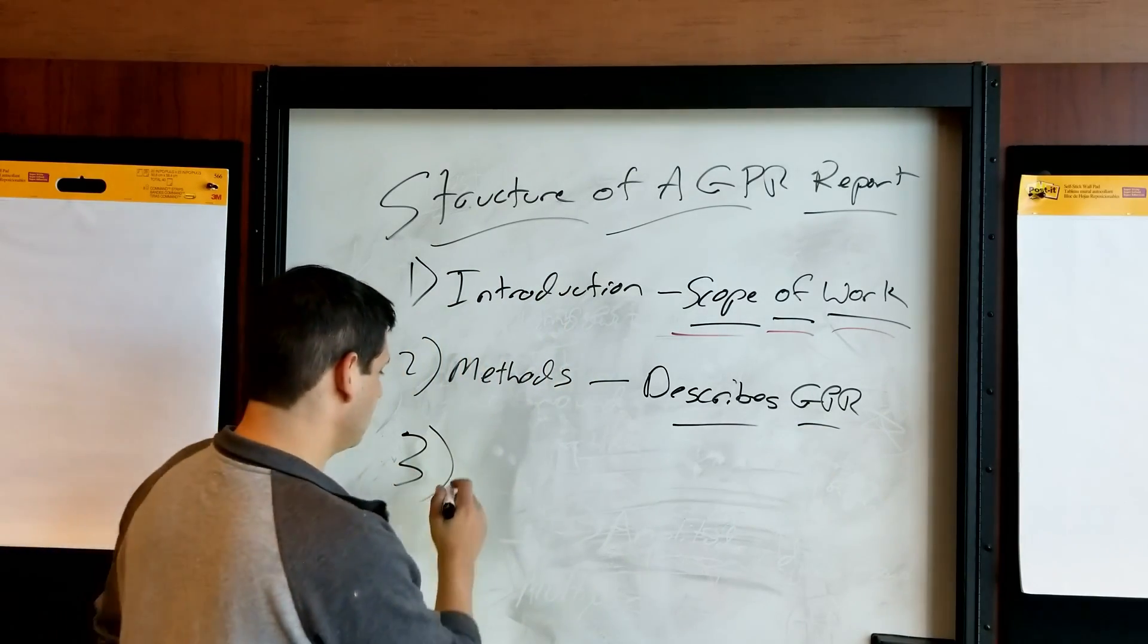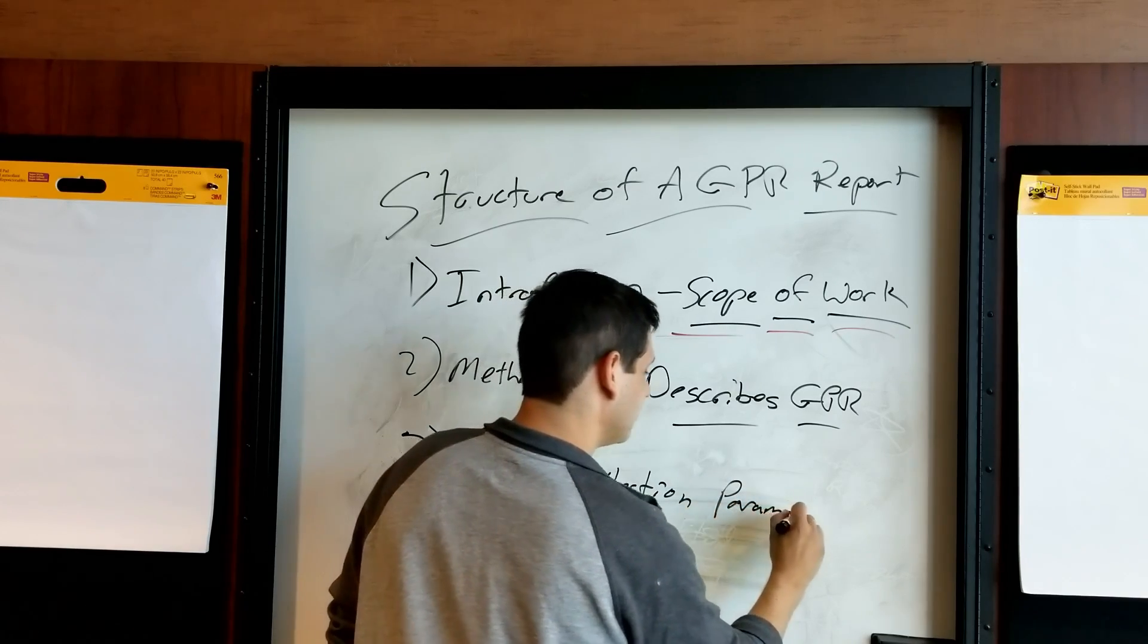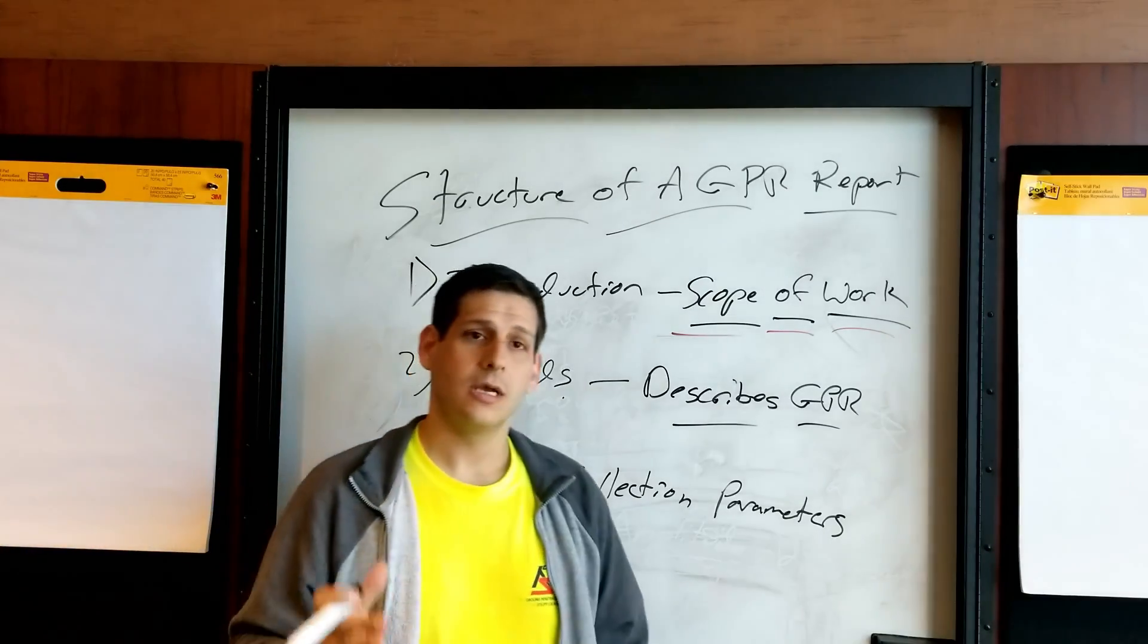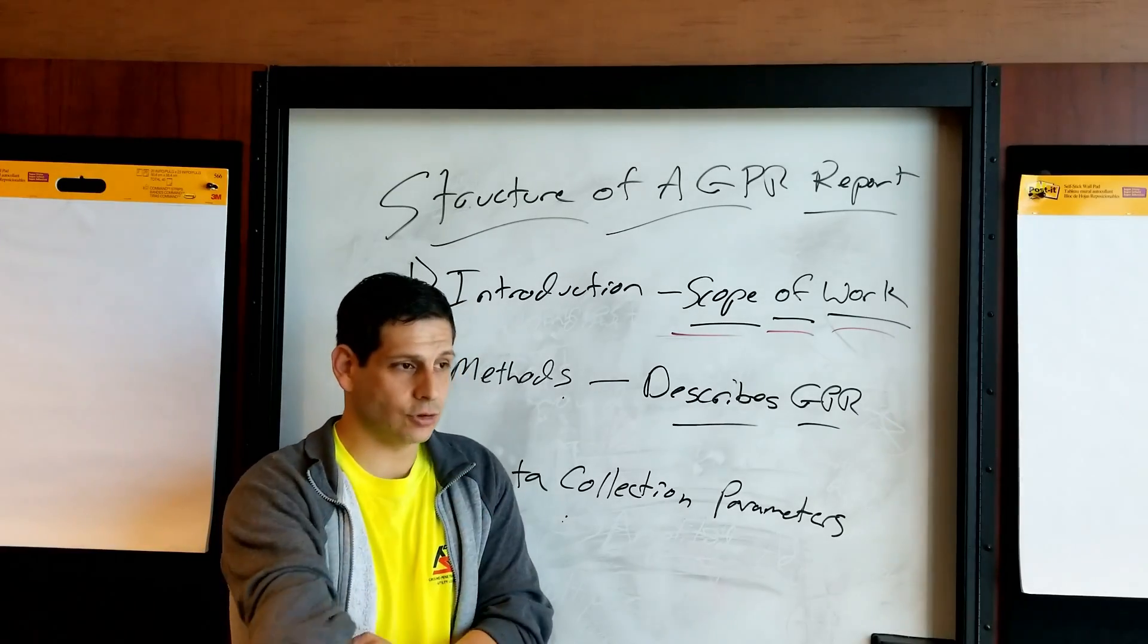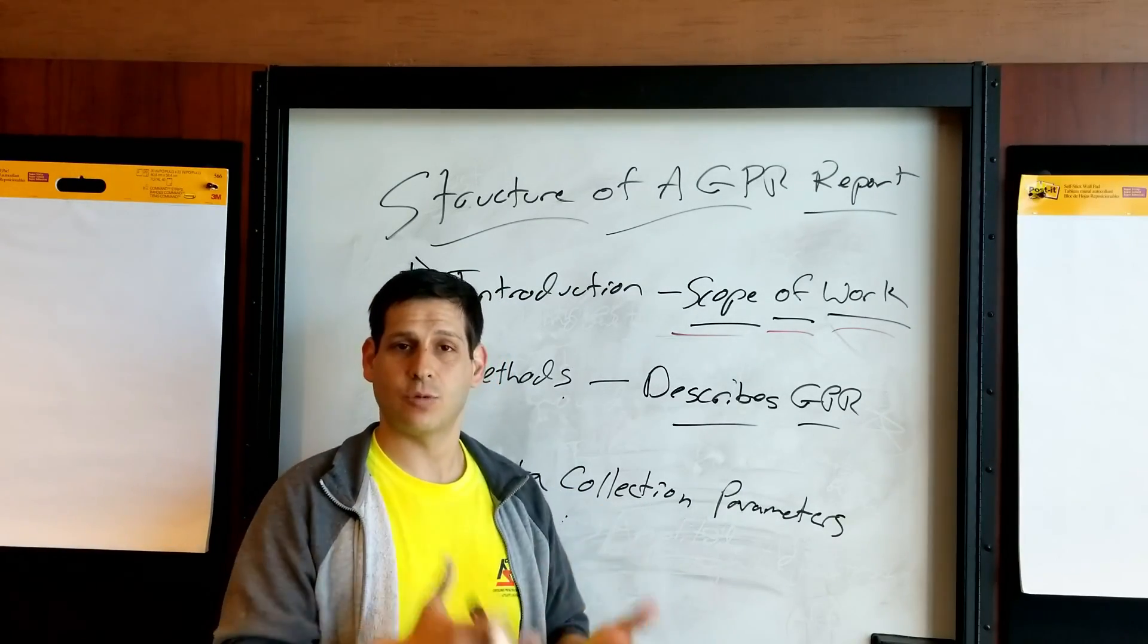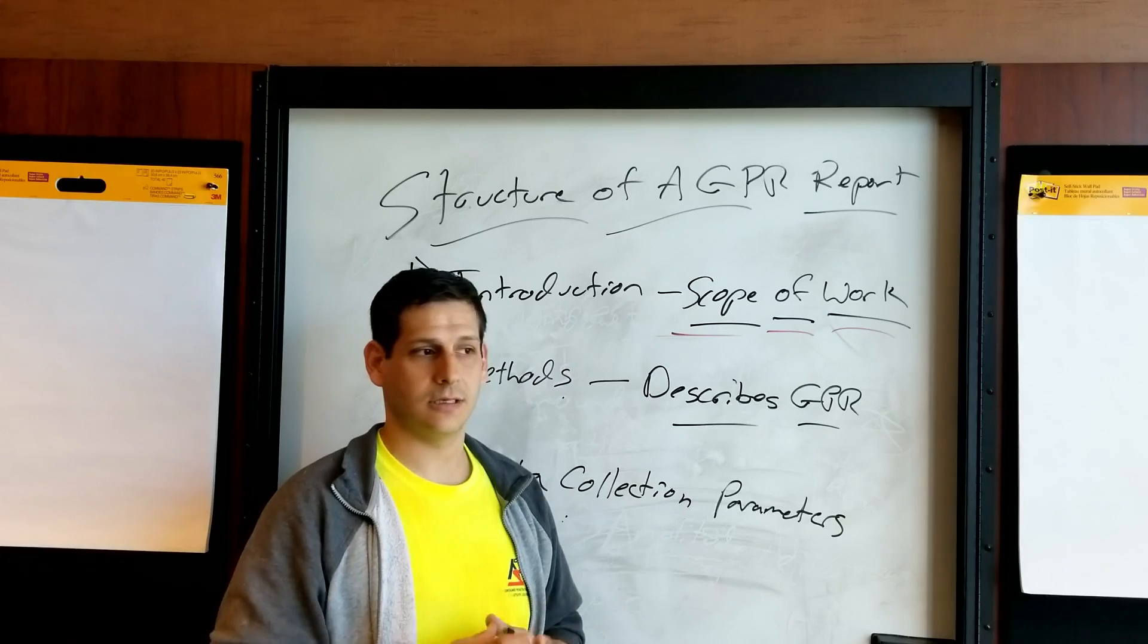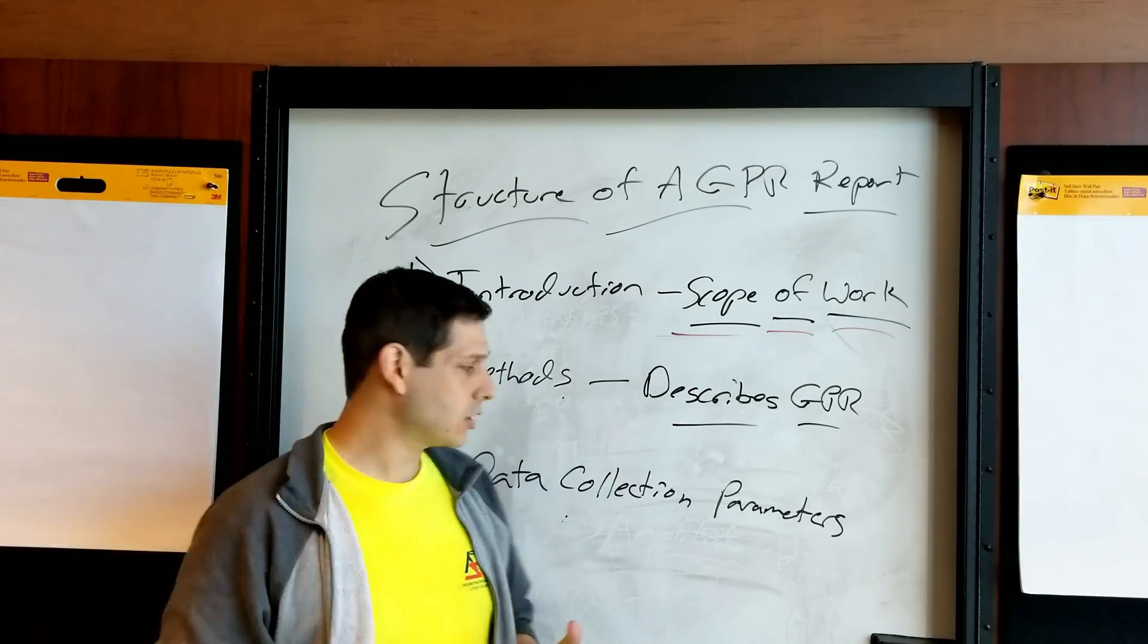Number three is data collection parameters. Data collection parameters. So here's where I basically outline the strategy. I may say exactly what system I use. I might say that up here, but I might say it down here. The exact system you use, how you went about doing it. You know, for locating graves, you might say because graves are so small and the area was sufficiently open without bushes or trees as obstacles. We laid out a grid that was 20 meters by 40 meters. And we collected data in a zigzag fashion and our transect spacing was every half a meter or every 30 centimeters, you know, whatever it is. And our step rate was this and our frequency was this. So that's all the stuff that goes into here. That's one example. Right. Of how you might want to lay it out in the report.